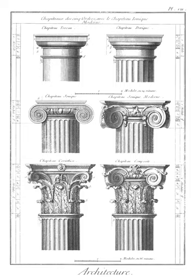Double depth plan: a plan for a structure that is two rooms deep but lacking a central corridor.